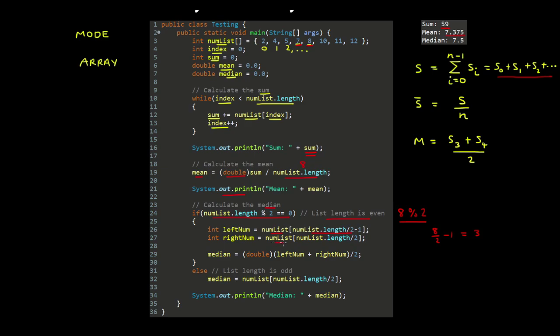So the left number is 7, the right number is 8, and then 7 plus 8 is 15. And we cast this to a double, which gives 15.0 on 2 gives 7.5.